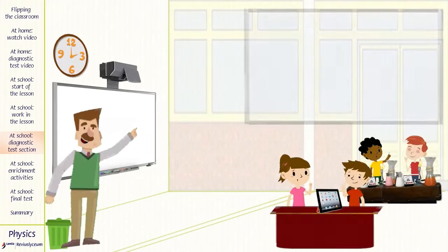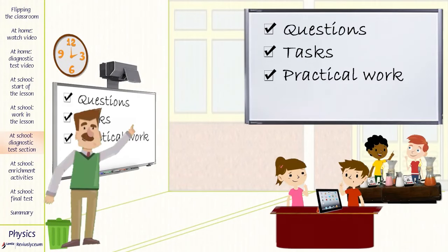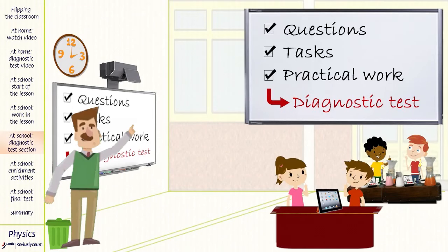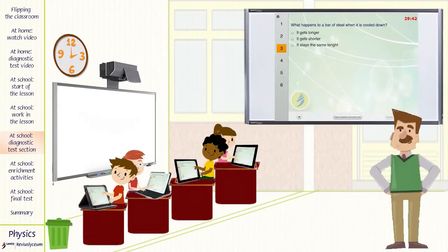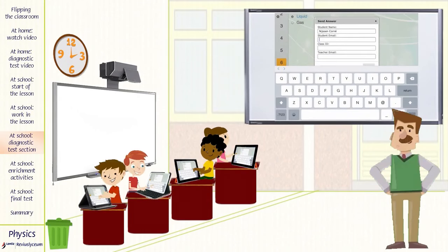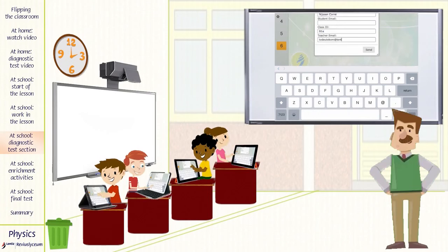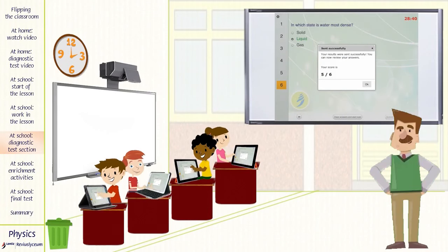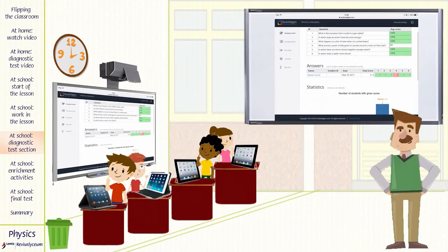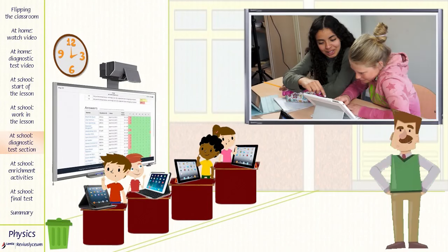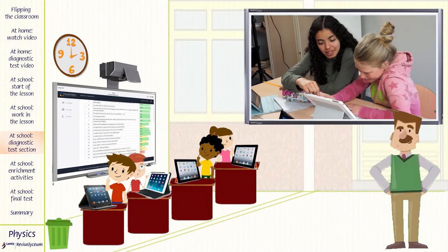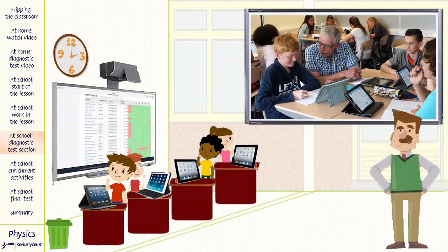When the group has done all the tasks and practical work, each pupil has to do a final diagnostic test individually. Again, the test will not be marked. But the test gives them and the teacher great insight into their knowledge of the section. The pupils can only start with the next section in the iBook when the results are good. When they are bad, the pupils can ask the members in the group or the teacher for help.